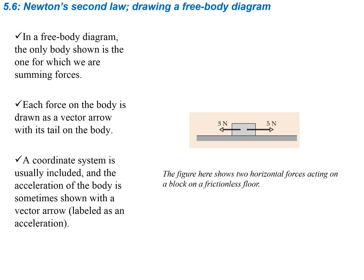Free body diagrams are going to be really important when working with forces. They let us visually show all the forces acting on an object. Here we have one object sitting on a surface with a 5-newton force to the right and a 3-newton force to the left, meaning the net force is found by adding all the forces together, which equals mass times acceleration.